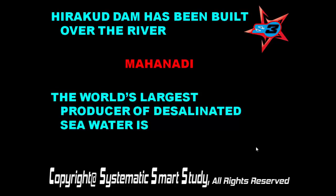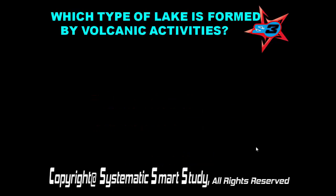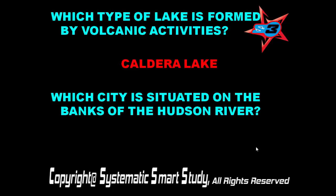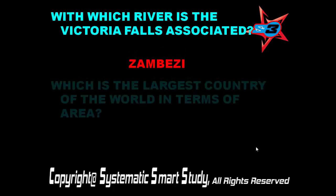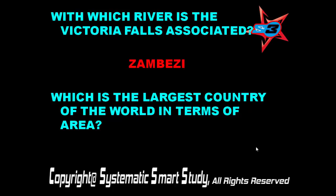The world's largest producer of desalinated sea water is Saudi Arabia. Which type of lake is formed by volcanic activities? A caldera lake. Which city is situated on the banks of the Hudson River? New York. With which river is Victoria Falls associated? The Zambezi. Which is the largest country of the world in terms of area? Russia.